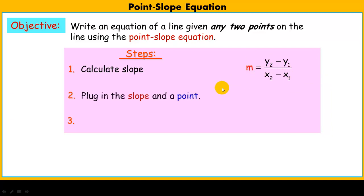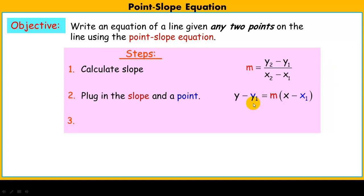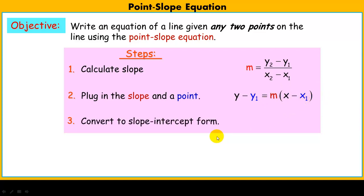Next, once we have the slope, we're going to plug in the slope and then plug in one of the points — either one of the points on the line, but typically one of the ones we used — into our point-slope formula. It's called point-slope because there's the point and there's the slope. Once we plug it in, we're going to convert it to slope-intercept form, which gives us the slope and the y-intercept, where our line crosses the y-axis.